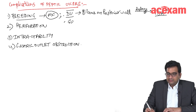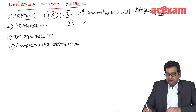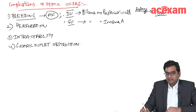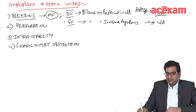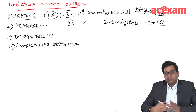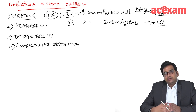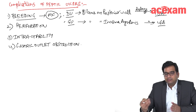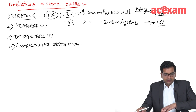In gastric ulcers, the ulcers are located on the incisura, most commonly at the level of incisura angularis, and the most common artery involved is the left gastric artery. Overall, duodenal ulcers are more common, so bleeding is more common in duodenal ulcers, and the most common artery responsible for peptic ulcer bleeding is the gastroduodenal artery.